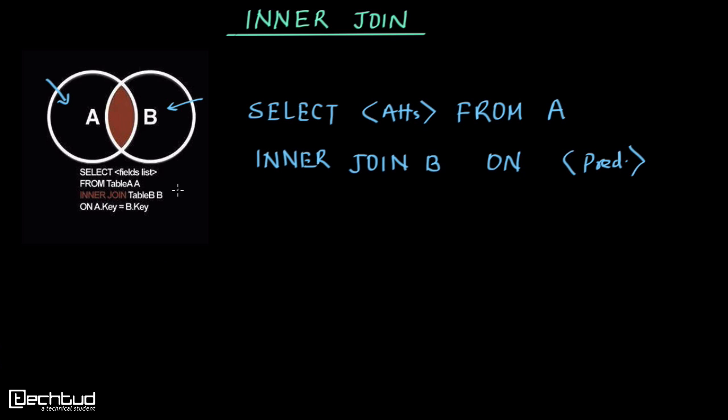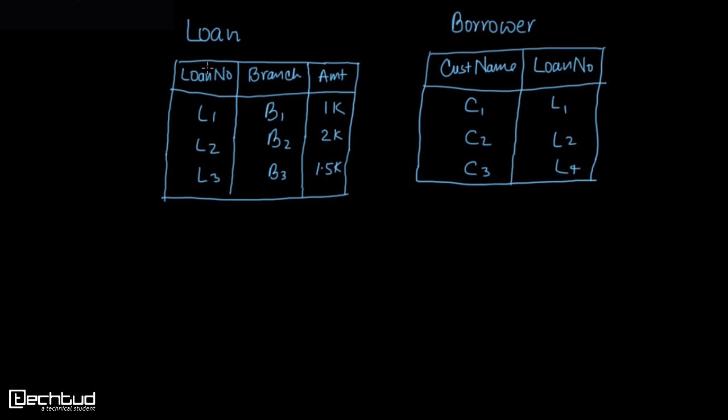It's better to take an example to understand it. Let's say we have two relations: Loan and Borrower. I'll draw the relation instances. We are going to join these using inner join. We will select loan number,